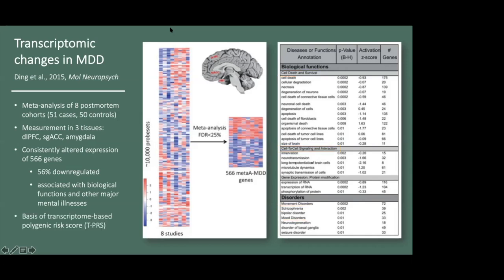In order to facilitate translation of these findings into living people, our group developed a novel transcriptome-based polygenic risk score, or TPRS, that captures variants partially mimicking this transcriptomic signature.